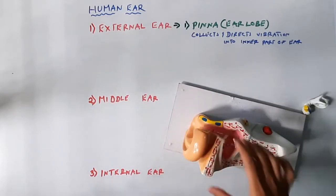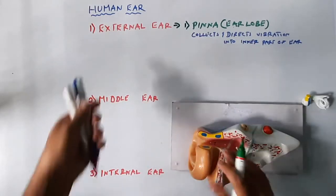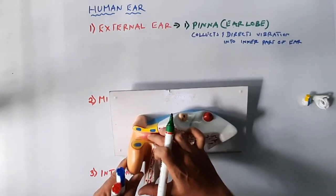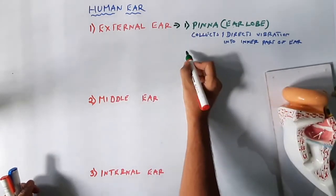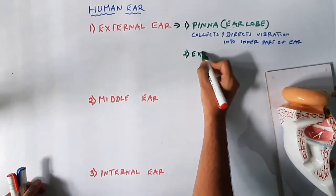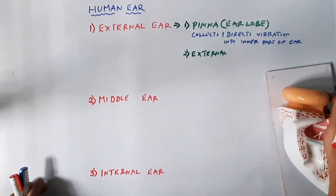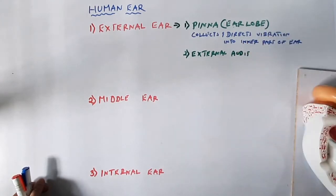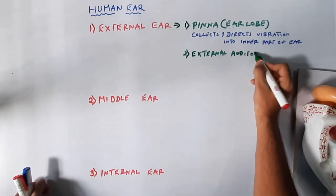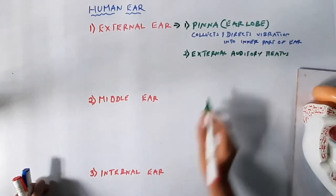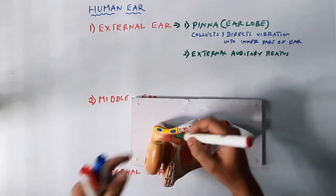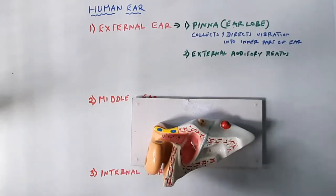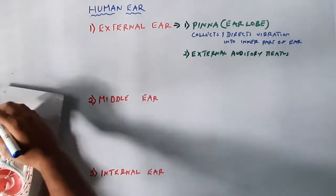The second part of the external ear is the canal called the external auditory meatus. It is a long canal situated outside the inner ear, and it plays an important role in transferring vibrations into the inner ear. Inside the external auditory meatus, certain glands are present.